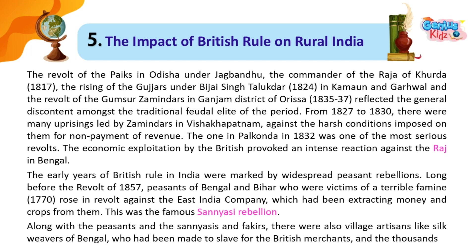The economic exploitation by the British provoked an intense reaction against the Raj in Bengal. The early years of British rule in India were marked by widespread peasant rebellions. Long before the revolt of 1857, peasants of Bengal and Bihar who were victims of a terrible famine in 1770 rose in revolt against the East India Company, which had been extracting money and crops from them. This was the famous Sanyasi Rebellion. Along with the peasants, the sanyasis and fakirs, there were also village artisans like silk weavers of Bengal, who had been made to slave for British merchants.